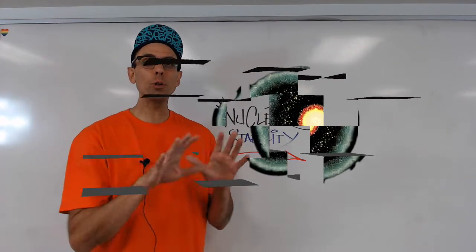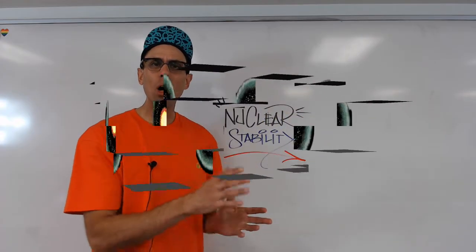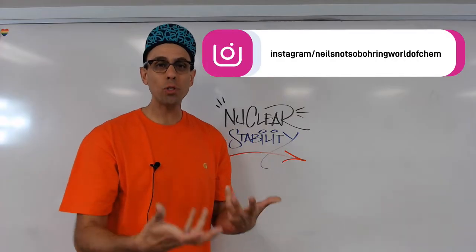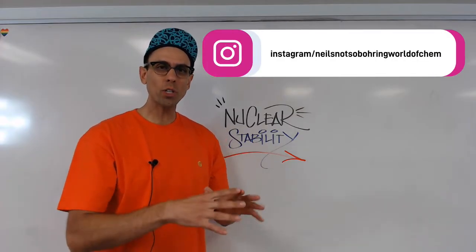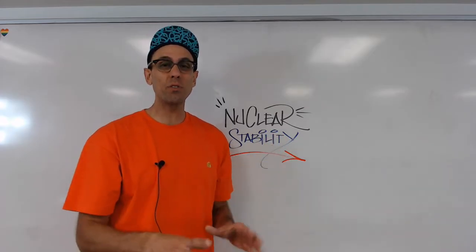We're living in a universe filled with atoms and some of them have nuclei that are stable while others undergo something called decay. How can we as chemistry students predict whether or not a specific nucleus is going to remain stable or undergo one of those decay processes? That's the goal of this video.